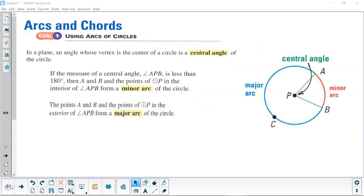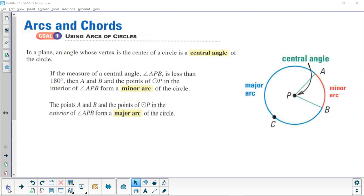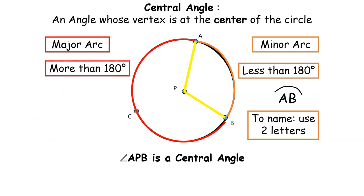If there's a minor arc, there must be a major arc. In blue here, we see our major arc. Notice that as we look at our major arc in red, it is greater than 180 degrees. It passes through three points. We always name major arcs with three letters. Here we have arc ACB.